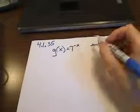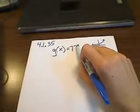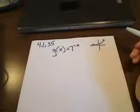Transforming it means taking a look at the base function, which is 7^x, and recognizing how this negative there would affect it.